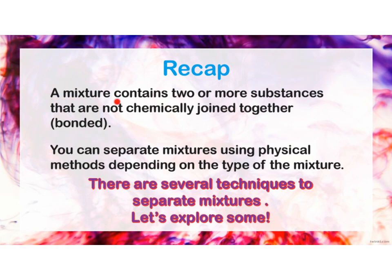What do we mean by a mixture? A mixture contains two substances that are not chemically joined together. As an example, sugar water is formed from sugar mixed with water. There's no chemical bond between sugar and water — I've simply mixed them in the same container. Since there's no chemical bond joining them, I'm able to separate these substances back. Mixtures are separated by using physical methods depending on the type of the mixture.